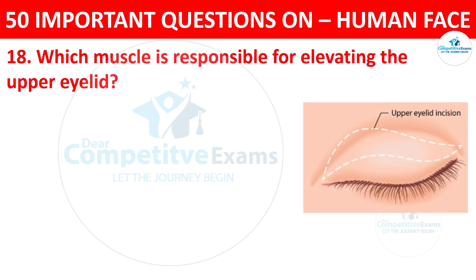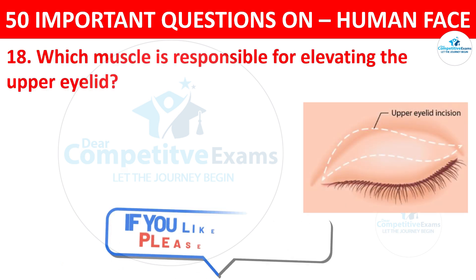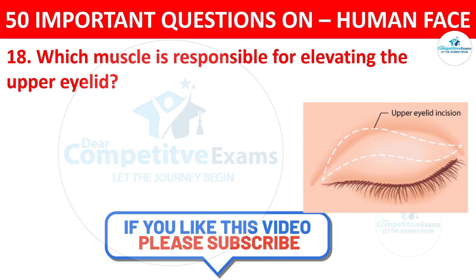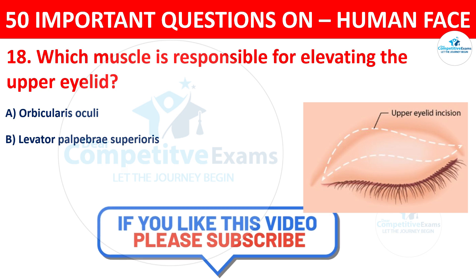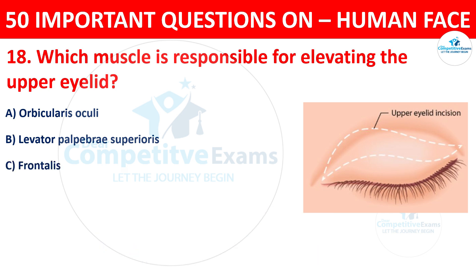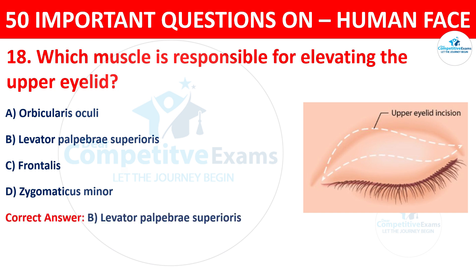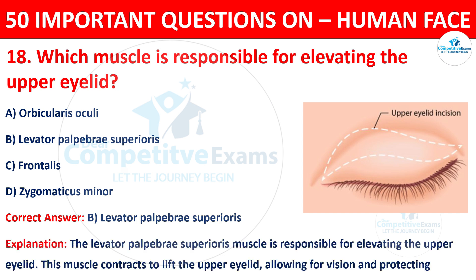Question number eighteen: which muscle is responsible for elevating the upper eyelid? The options are orbicularis oculi, levator palpebrae superioris, frontalis, or zygomaticus minor. The correct answer is B, levator palpebrae superioris. This muscle is responsible for elevating the upper eyelid — when it contracts, it lifts the upper eyelid, allowing for vision.